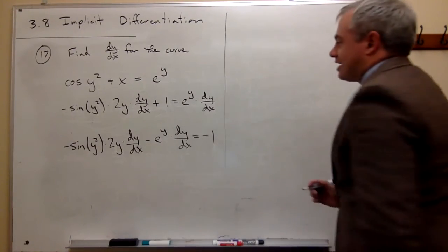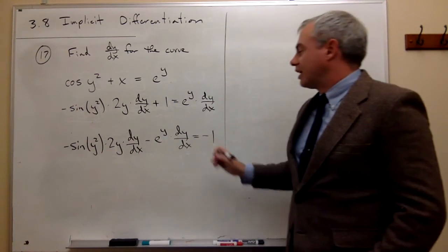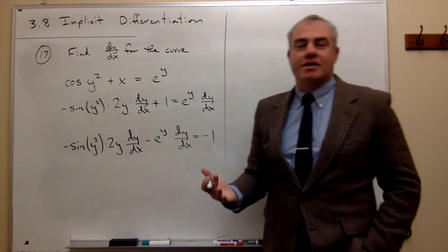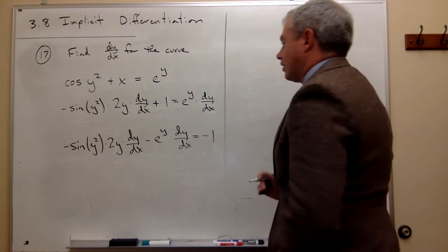Notice everything is negative on both sides of the equation. I could just cross out all those negatives and make them all positives. Let's rewrite it.